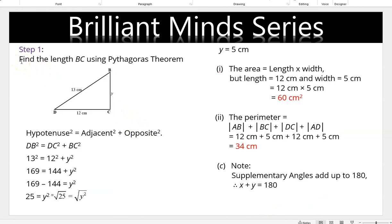This is a rectangle with a diagonal. To find the length BC, apply Pythagoras' theorem: DB² = DC² + BC². Simplifying: we get the equation with three terms. Transposing 144 to the left gives 25 = y², so taking the square root of both sides gives y = 5 cm. Area of rectangle = length × width. Perimeter is the distance around the rectangle: AB + BC + DC + AD = 34 cm.